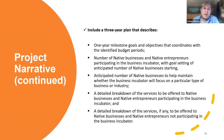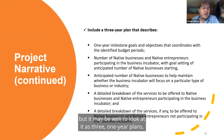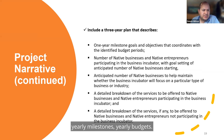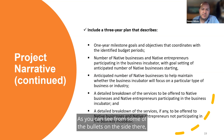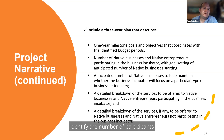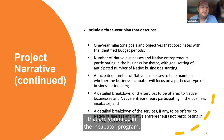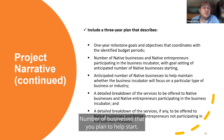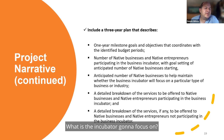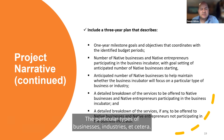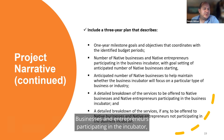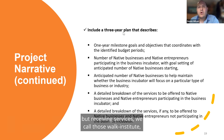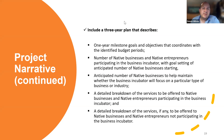This is a three-year grant, but it may be well to look at it as three one-year plans with yearly milestones and yearly budgets. Identify the number of participants in the incubator program, the number of businesses you plan to help start, what industries the incubator will focus on, the breakdown of businesses and entrepreneurs participating in the incubator, and those that are not participating but receiving services — we call those walk-ins.